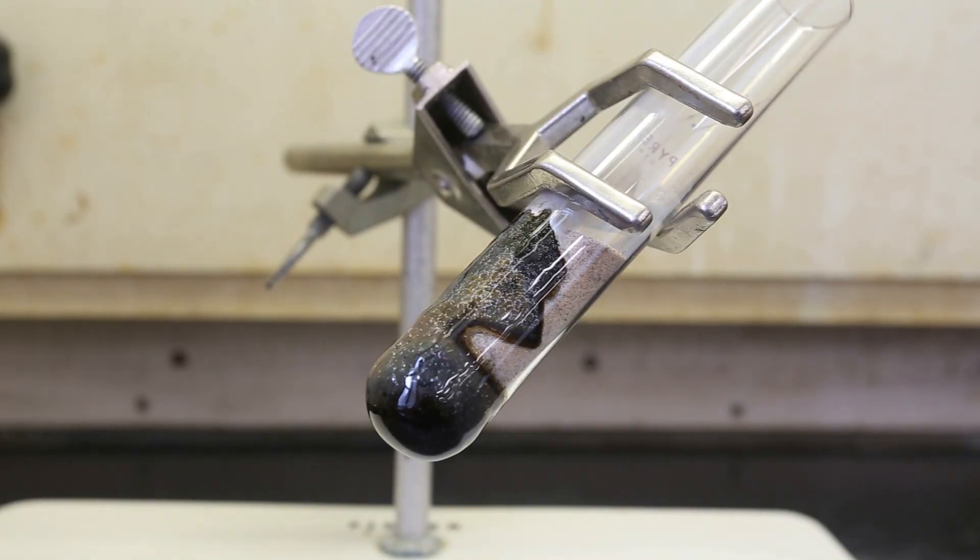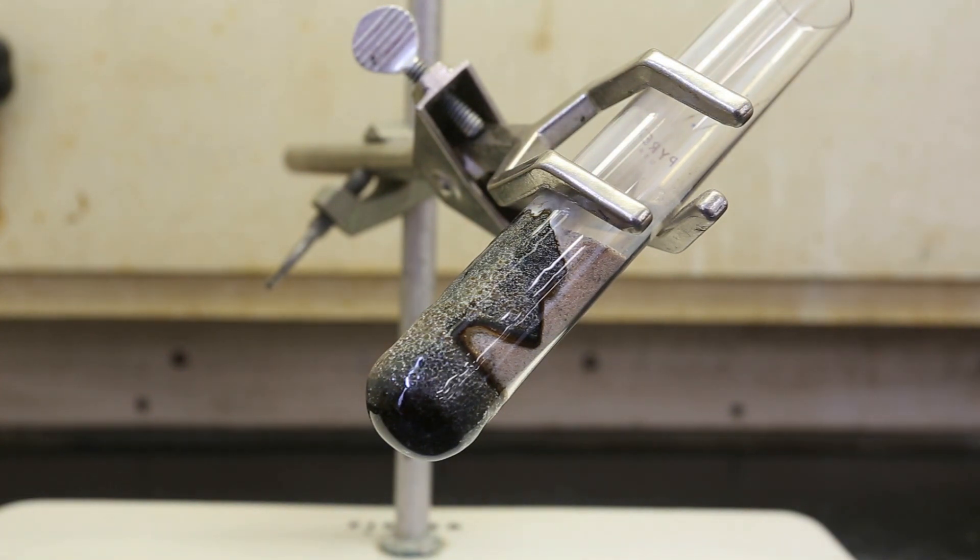Here I have time-lapsed the cooling of the test tube, and you can see that it slowly cracks as the test tube cools down. Don't worry about this, because the magnesium silicide coats the inside of the test tube and it will prevent it from falling apart.